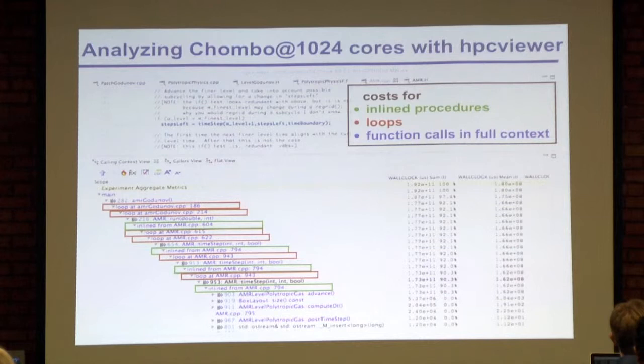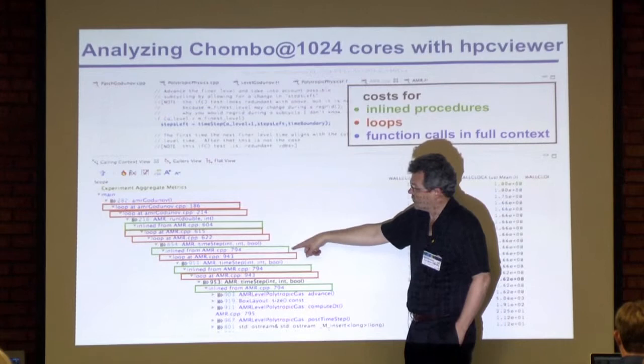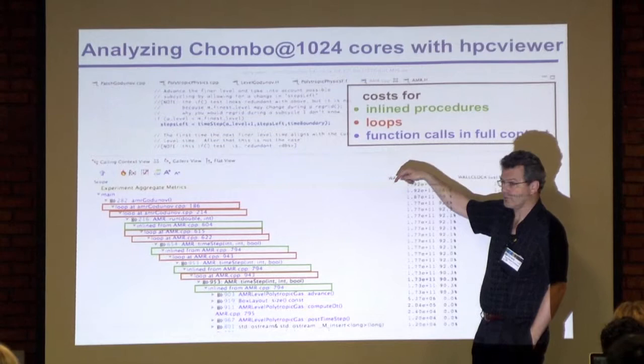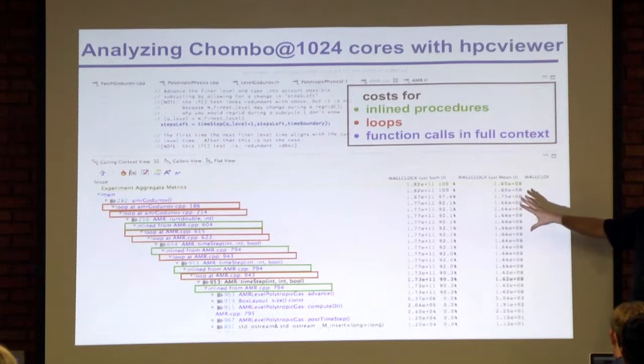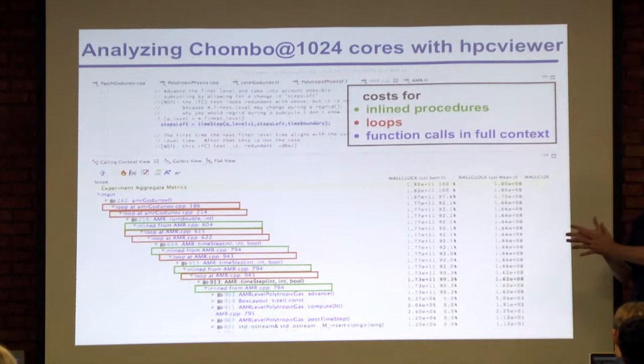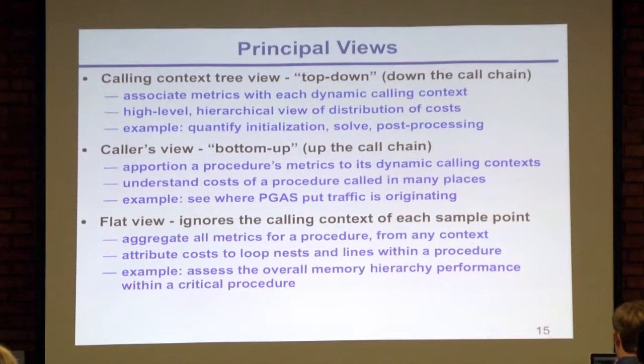What you get with HPCToolkit — a consequence of the HPCStruct binary analysis — is not just call chains but also information about loops within call chains, and inline code shown in green. We get that from binary analysis where we recover loops and information about inline code. This costs nothing extra at runtime since we're overlaying static analysis on top of dynamic call chains.